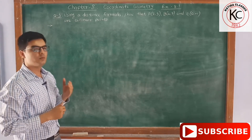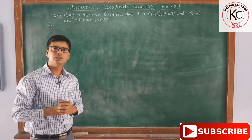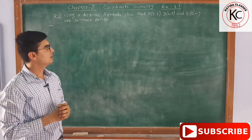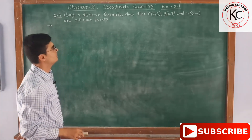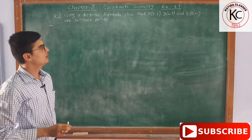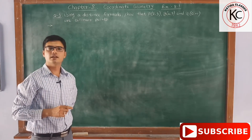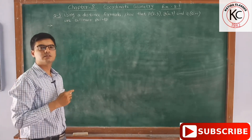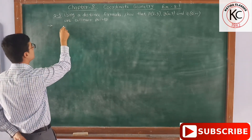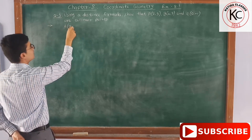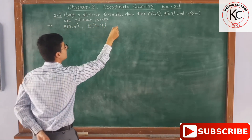Now, what do you mean by collinear points? Collinear points mean the points lying on the same line. So how can we find this? First of all, we will have to find the distance between these three points and then we will decide that these points are collinear points. Here the three points are A, B and C.